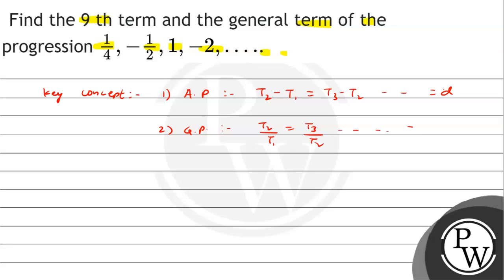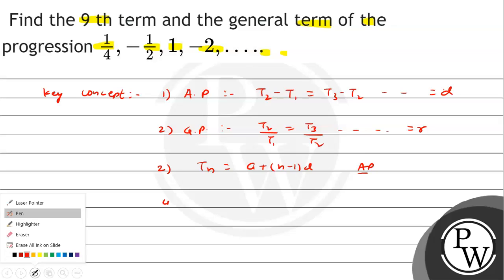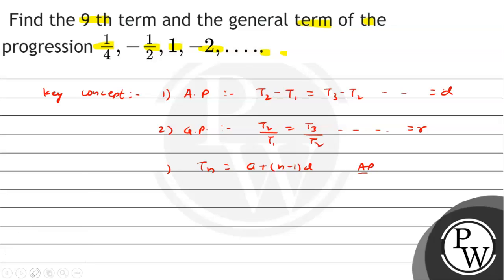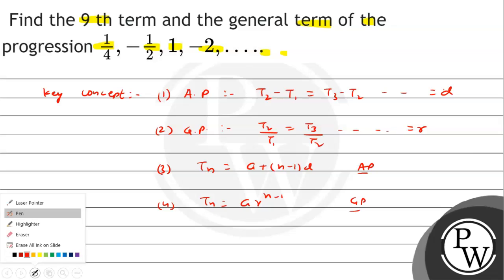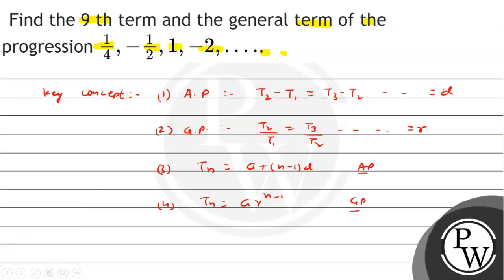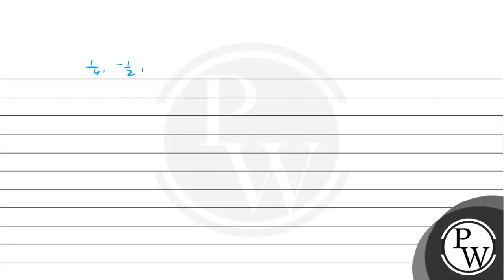T3 by T2 and so on. General term of AP is A plus (N minus 1)D. General term of GP is TN equal to AR raised to the power N minus 1. Taking all these concepts forward, let's see what the progression is: 1/4, minus 1/2, 1, minus 2, dot dot dot.